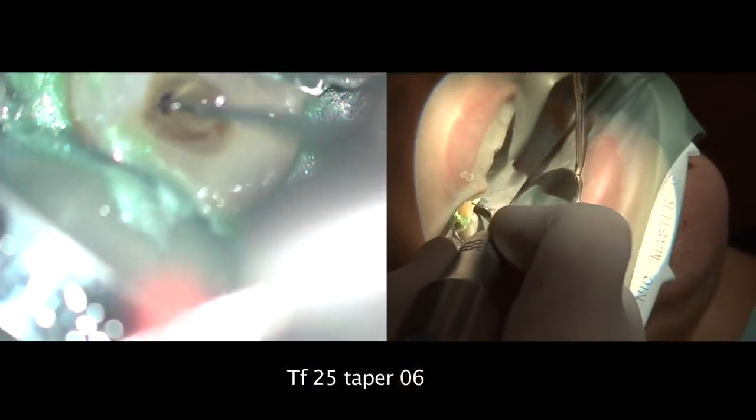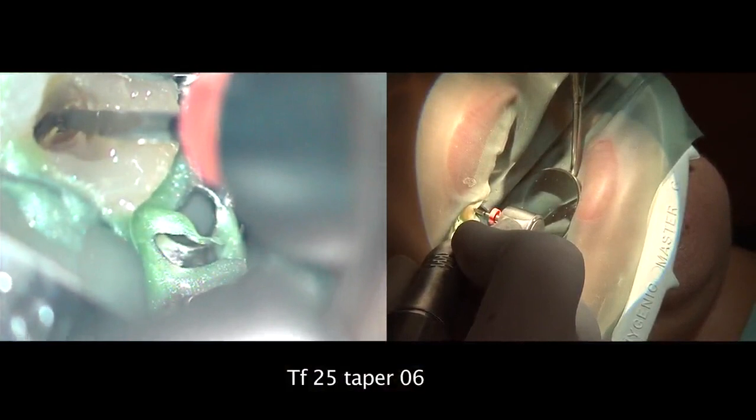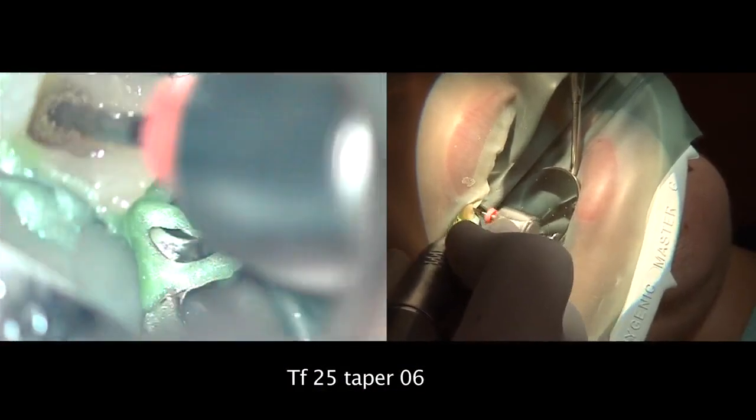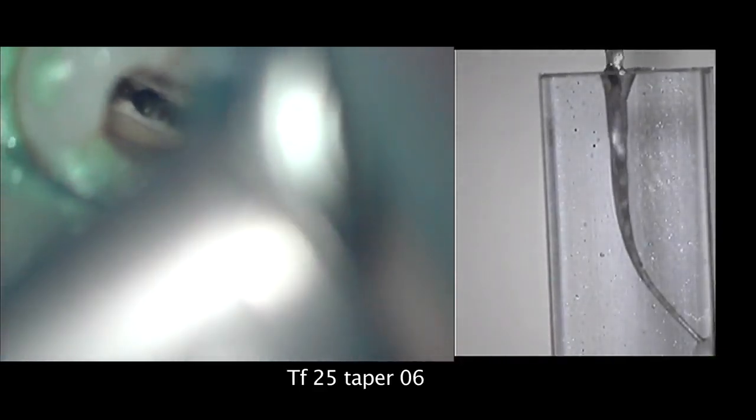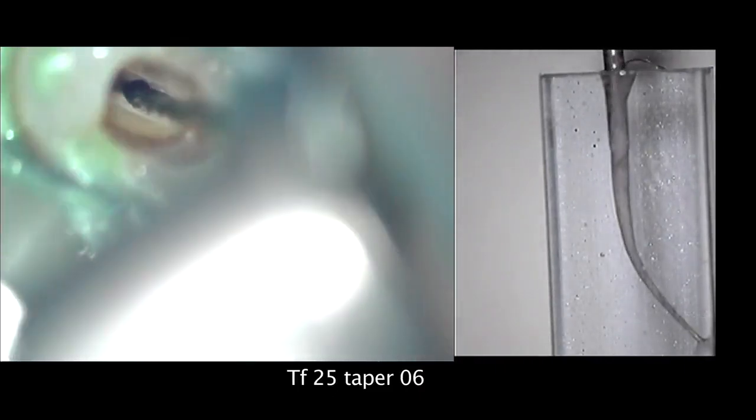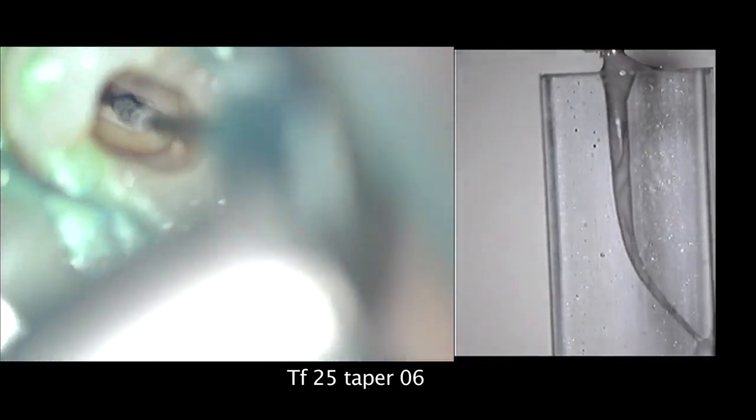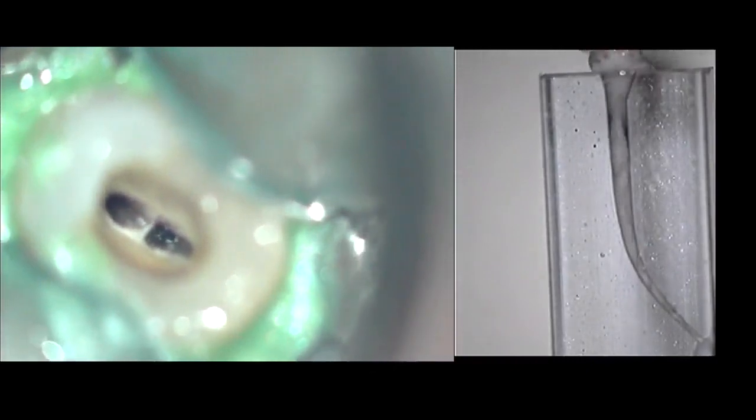The next step is to use 25-06 in order to reach the apical area and the working length. Again it's going to be four gentle strokes in the buccal and in the palatal canal. As you can see on the slow motion how the 25-06 is going inside the root canal, working, cutting and taking the debris out of the root canal system. Again the macro cannula is used to clean this area in both canals.